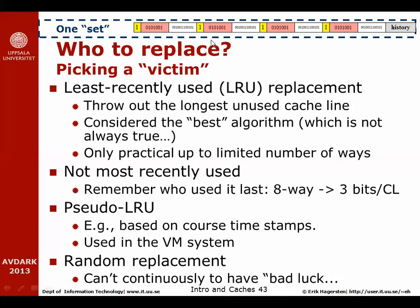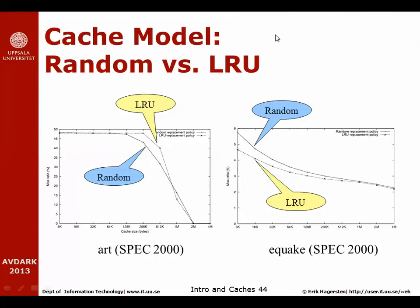Finally, there is one fairly common replacement strategy which is simply random replacement — you just randomly pick one of the four and throw that one out of the cache. Hopefully you cannot continuously have bad luck, so if you happen to throw out a cache line that was very precious and you access it soon again, well, next time you access it it will be brought into the cache and hopefully some other cache line will be thrown out the next time.